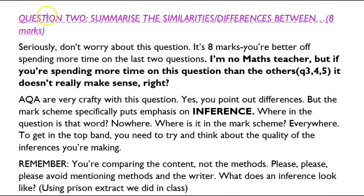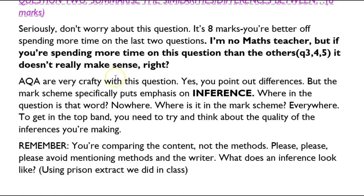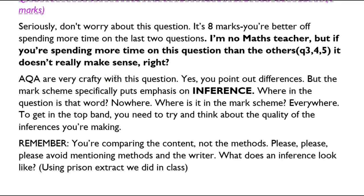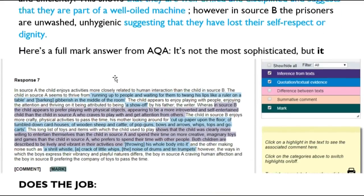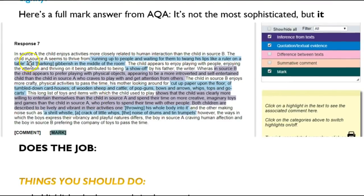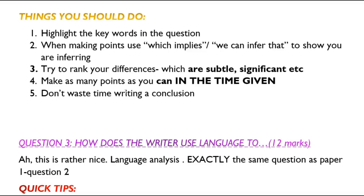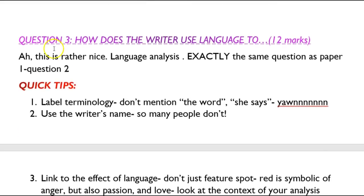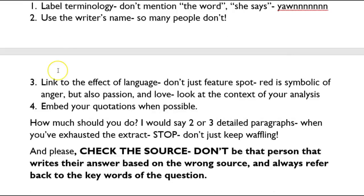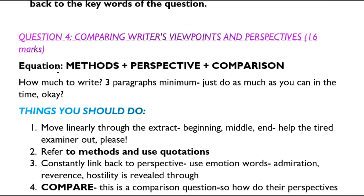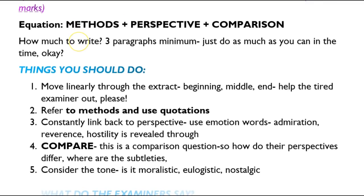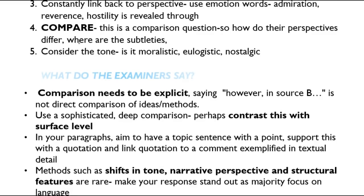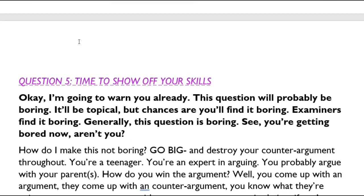Kimi's gone into detailed analysis of what you need to do in question 2 — it's not so long that you couldn't read it quickly. Then she's found an examiner's response and summarised the things you should do for question 2. Similarly for question 3 — quick tips, what the examiner is looking for. Same with question 4 — how to get the top marks.